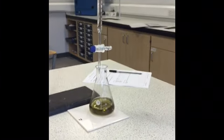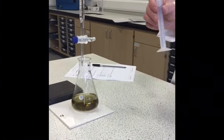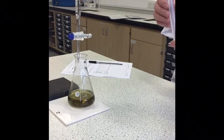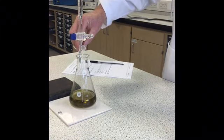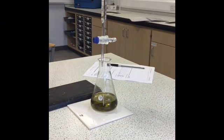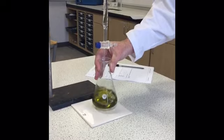We then add 10 cubic centimetres of ammonia just using the same measuring cylinder as you did for ammonium chloride. This is to make sure the solution is basic as the EDTA works best in a basic solution.